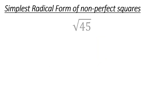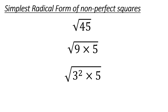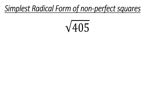Square root of 45. Some kids have a hard time recognizing this — this is where you really need to know your times tables. You can think of this as 9 times 5, and hopefully you'll see that 9 is a perfect square — you can think of it as 3 to the second. Therefore, when it comes out front, it's just going to be a 3. So the answer is 3 times the square root of 5.